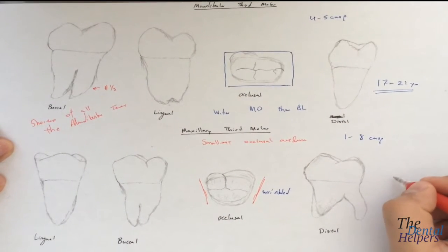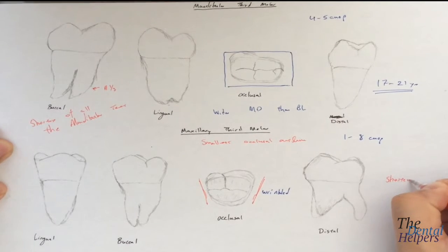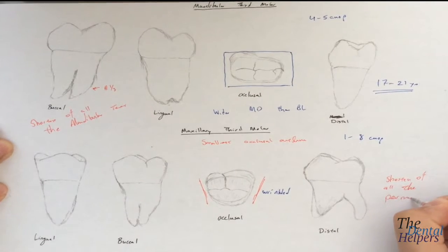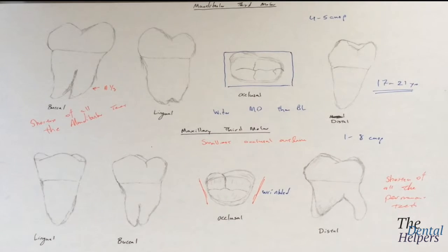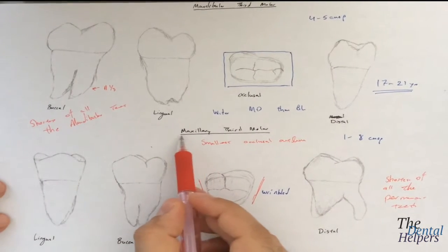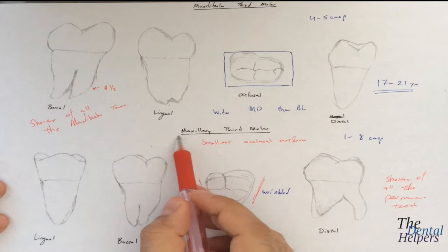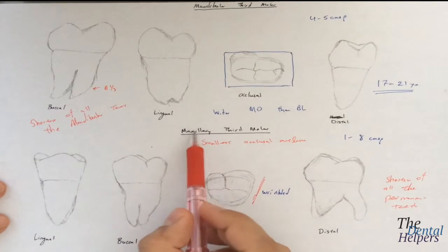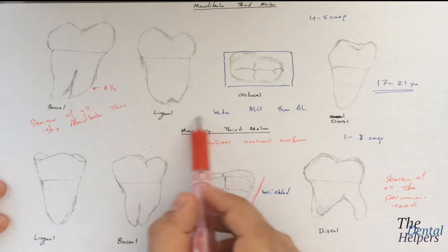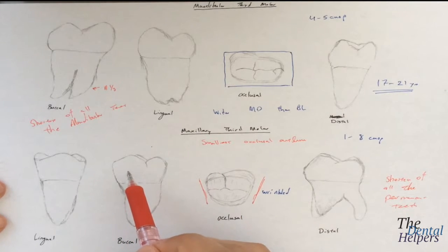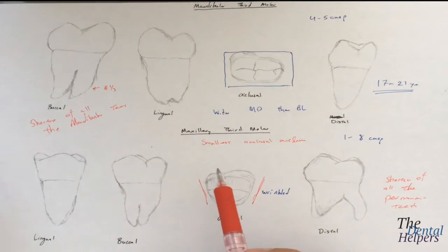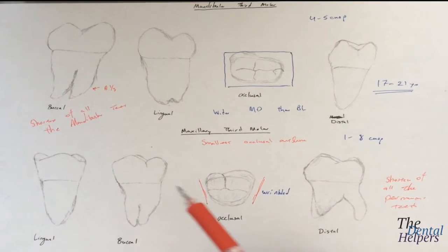While the maxillary third molar is the shortest of all the permanent teeth. A way to remember that is 'max' is another way of saying maximum, so the maxillary are the max shortest teeth. That's a pretty bad way to remember it, but it's silly enough that you probably won't forget it.